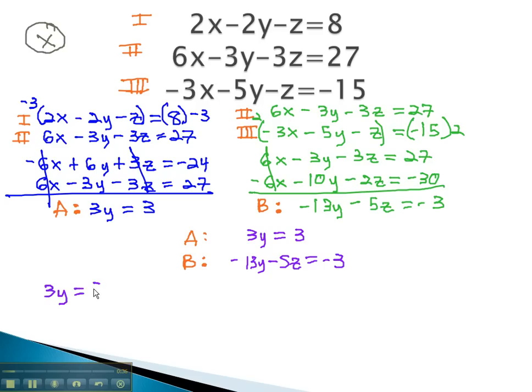Equation A is 3y equals 3. By dividing both sides by 3, we'll be able to find out that y is equal to 1.